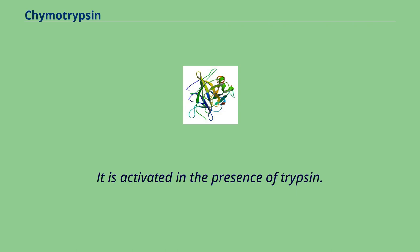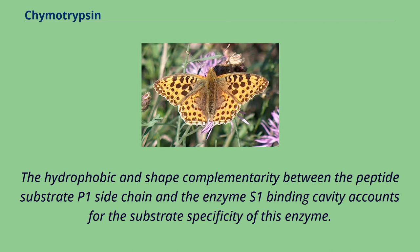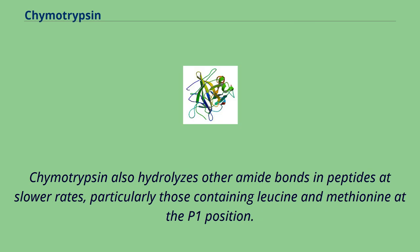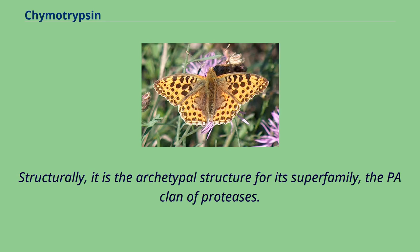It is activated in the presence of trypsin. The hydrophobic and shape complementarity between the peptide substrate P1 side chain and the enzyme S1 binding cavity accounts for the substrate specificity of this enzyme. Chymotrypsin also hydrolyzes other amide bonds in peptides at slower rates, particularly those containing leucine and methionine at the P1 position. Structurally, it is the archetypal structure for its superfamily, the PA clan of proteases.